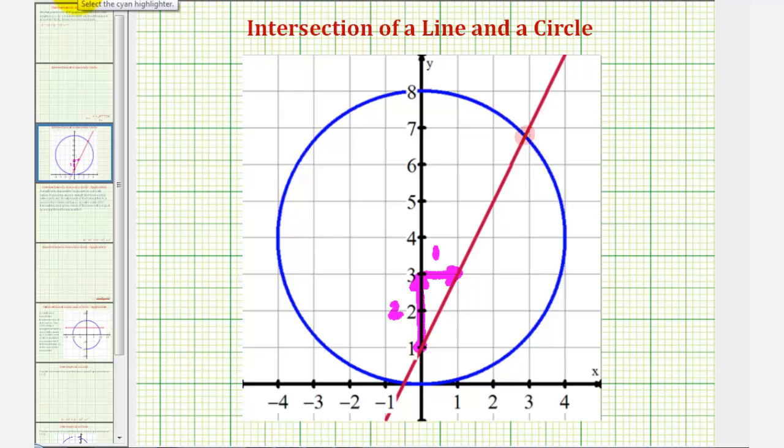Then looking at the circle, notice how it has a center of (0,4) and the radius is 4 units. So we're going to begin by determining the equation of the circle and then solve this as a system of equations.